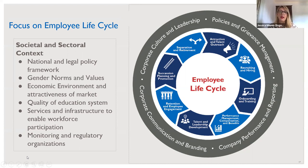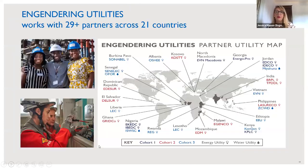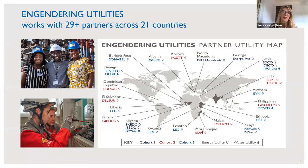We currently work with 29 partners across 21 countries, and next month we're adding an additional 13 new partners in our most recent cohort. We work globally — quite a few partners in Africa, but also in Latin America, Asia, and Eastern Europe. Each partner has a dedicated change management coach, and we have a team of five coaches that split up the coaching across these partners.